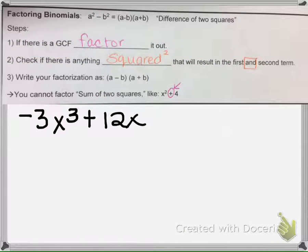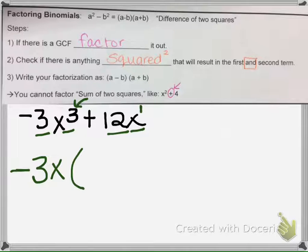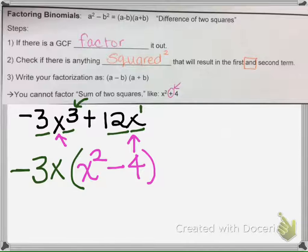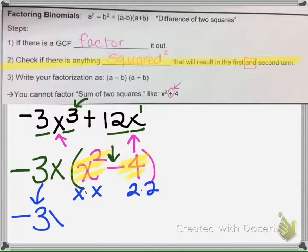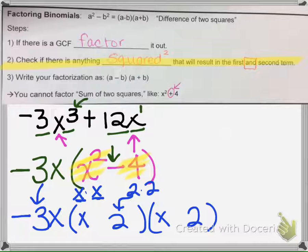Let's take a look at this one. This term has the highest exponent, and since the leading coefficient is negative, I'm going to pull out a negative. I also know 3 can go into 3 and 12, and they have x's in common, so I'll pull out the smallest exponent, which is 1. That gives us negative 3x times x squared and negative 3x times negative 4. Looking inside the parentheses, there are two terms with a minus in between. I ask: is there anything squared that gives x squared and 4? Yes — x times x is x squared and 2 times 2 is 4. The negative 3x stays, and we put x here and x here, then drop down the 2s making one positive and one negative.